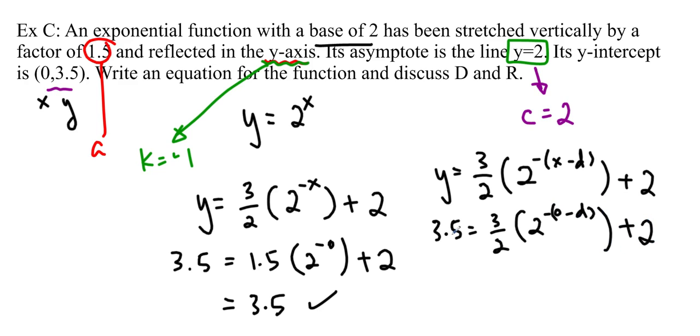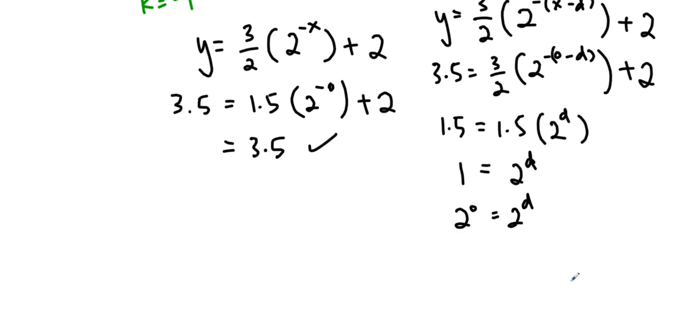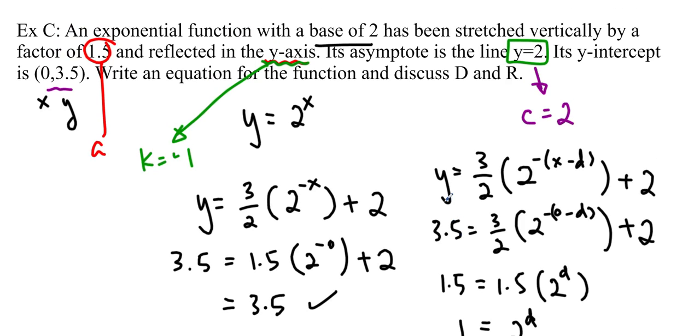And you can solve it this way as well. So we get 0 minus d plus 2, so you can move this over, and we'll get 1.5 on this side equals 1.5 times 2 to the d. And you can see that I divide this, so it gives 1 equals 2 to the d. And so this is 2 to the 0 equals 2 to the d. So d is equal to 0. So we were right.